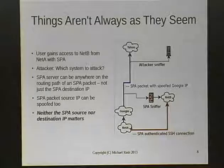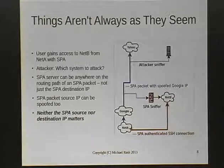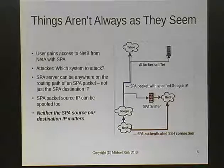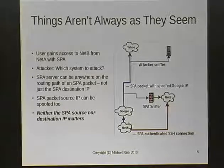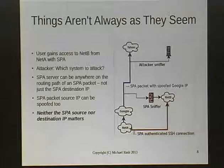There are some corollaries to the FWNOP design. From an attacker's perspective, not everything is always as it seems. Here we have an SPA client user of FWNOP trying to gain access to a service protected on network B, coming from network A. But remember that FWNOP encrypts the IP address to be allowed within the SPA payload, which means that the actual source IP of the SPA packet itself is totally meaningless — so it can be spoofed.